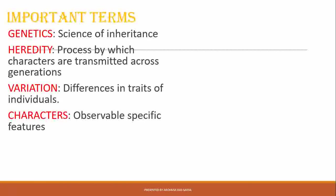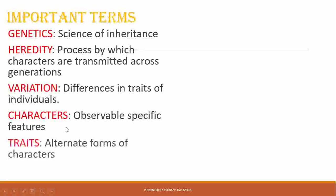For a cat, the external characters include being a furry animal with whiskers and round black or brown eyes. In humans, there are different characters that define a person. Characters are not necessarily external — internal characters also exist, such as the type of enzyme produced in your body, the type of hormone produced, and the hemoglobin content. Those are also characters.